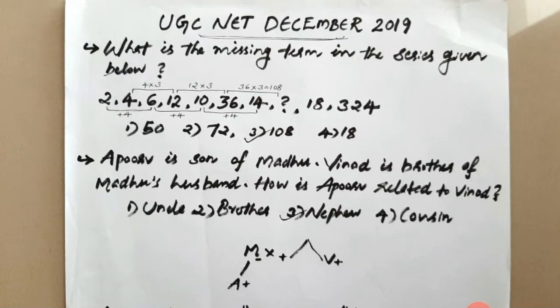The next question is number series. We have a question where a number is missing. We have to answer: 2, 4, 6, 10, 12, 36, 14, 18, 3, 24, etc. If we have to answer 14 and 18, the pin is 12.